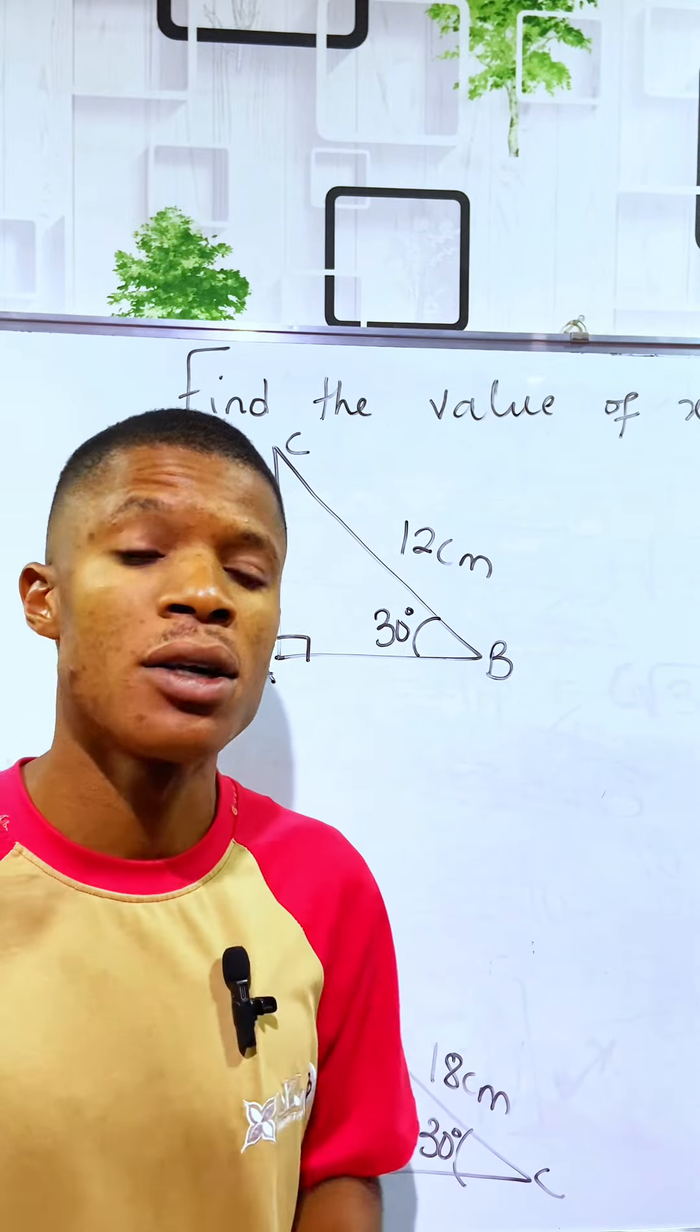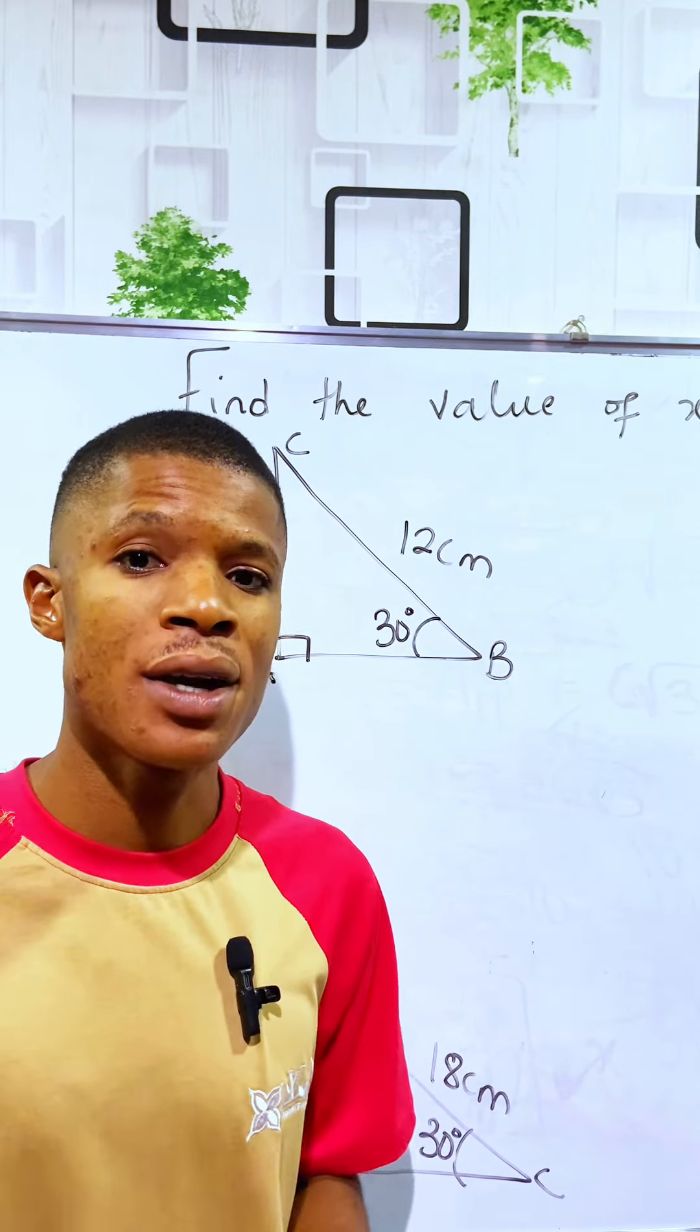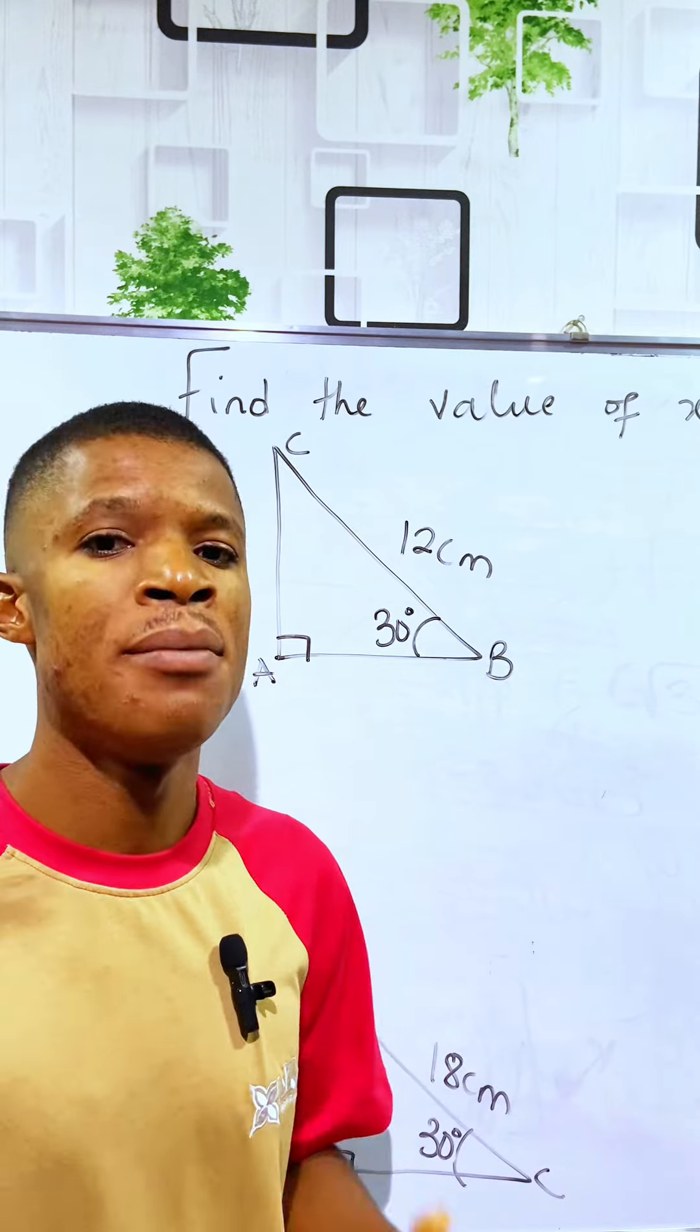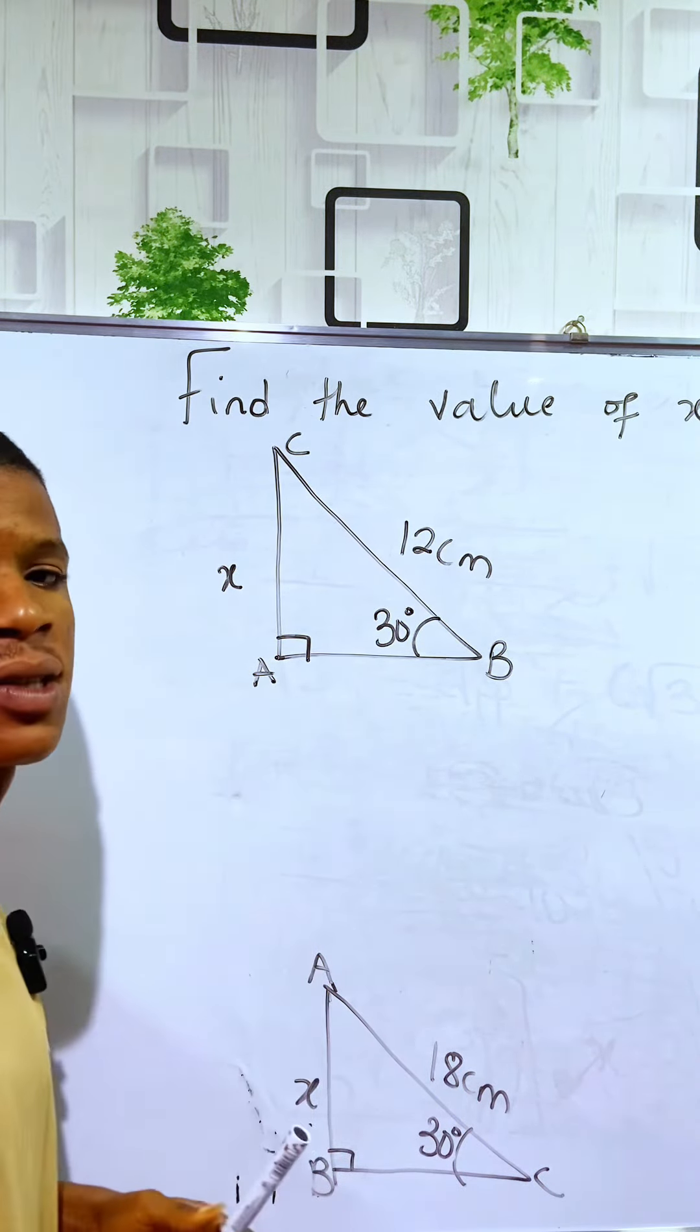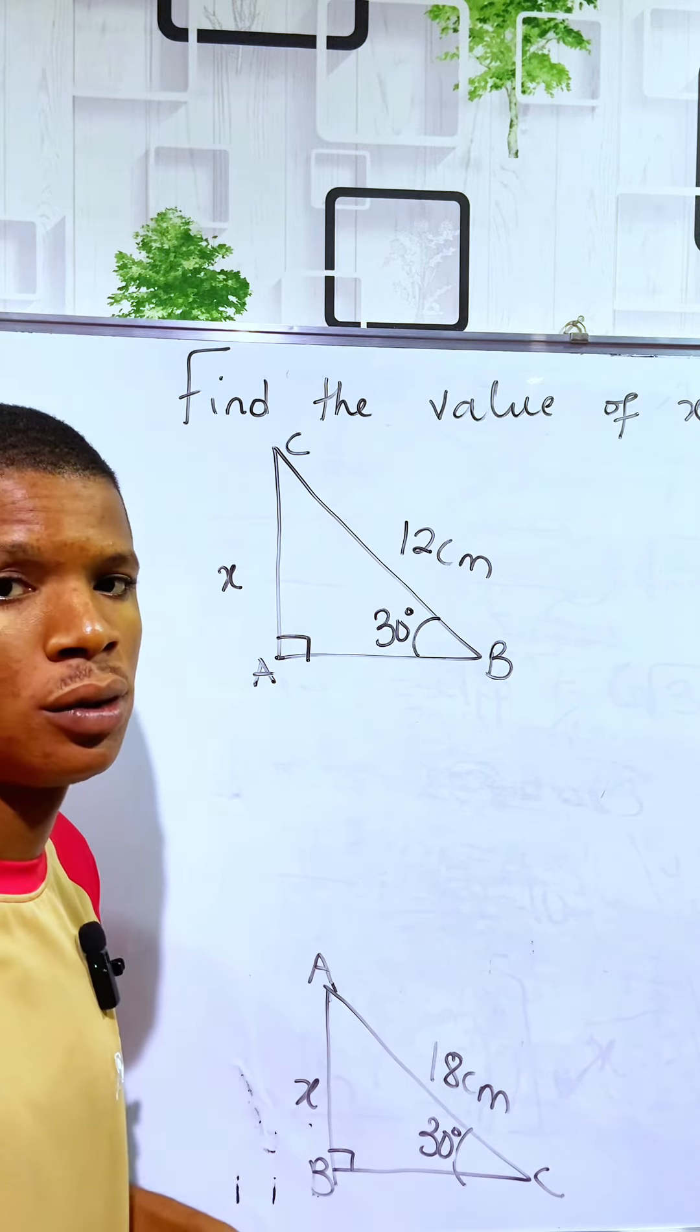Find the missing side of a right-angle triangle. If you think you can, please pause the video and make a guess. Here we are told to find the value of x in this right-angle triangle on the board.